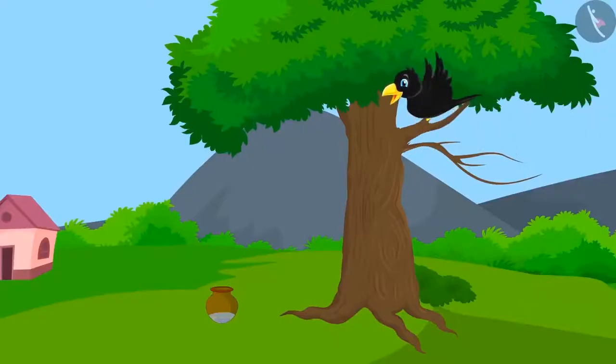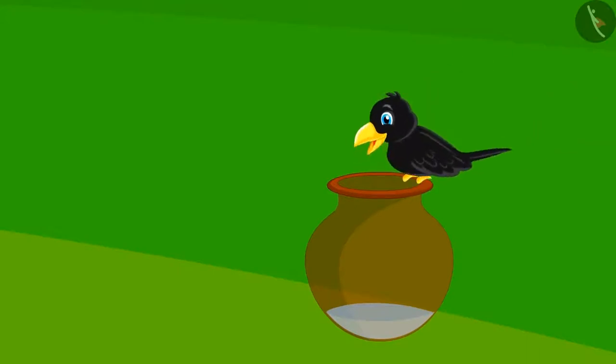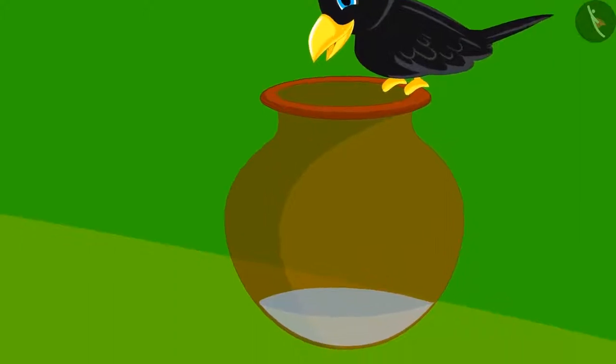The crow was very happy and flew to the pitcher. But the poor crow became very sad. The water in the pitcher was very low. The crow's beak could not reach the water.